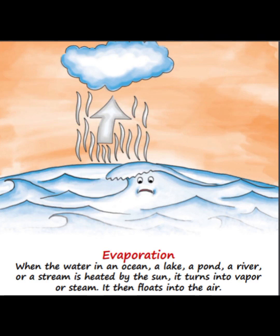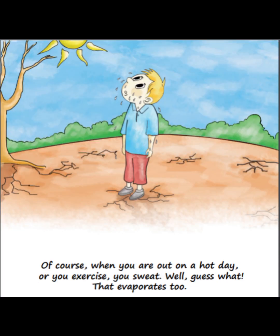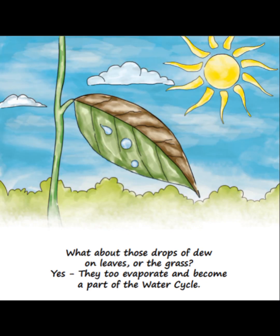Evaporation: when the water in an ocean, a lake, a pond, a river, or a stream is heated by the sun, it turns into vapor or steam and floats into the air. Of course, when you are out on a hot day or you exercise, you sweat — and that evaporates too. What about those drops of dew on leaves or the grass? Yes, they too evaporate and become a part of the water cycle.